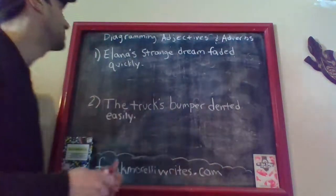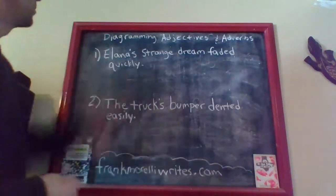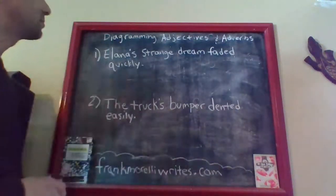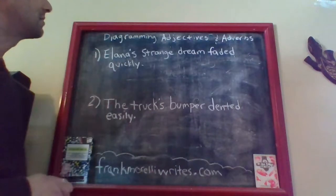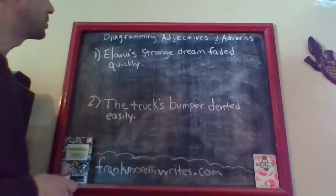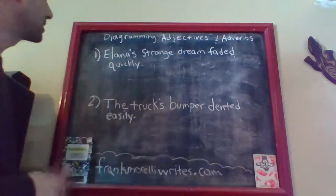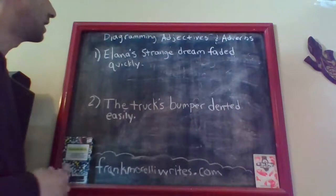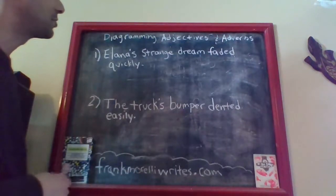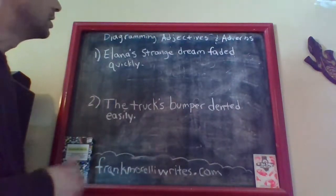Hopefully that didn't confuse you. So let me walk you through a sentence with a lot of adjectives and adverbs and show you how they are diagrammed. The first sentence says: 'Alana's strange dream faded quickly.'